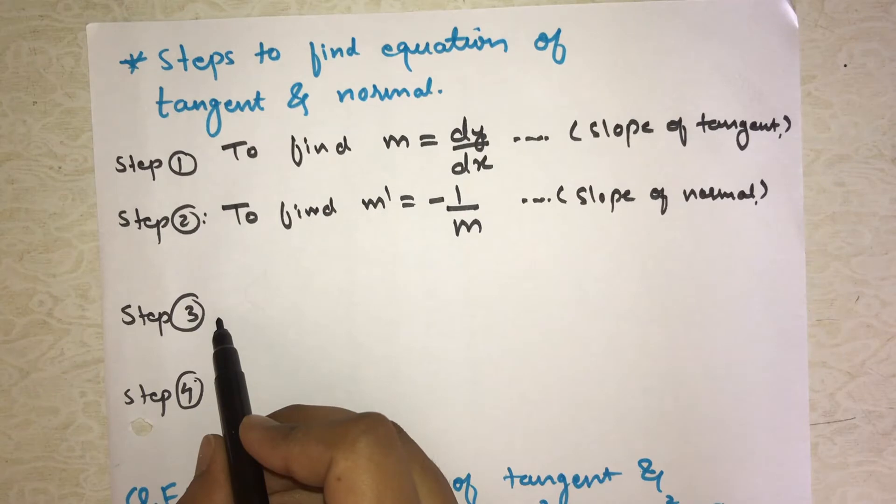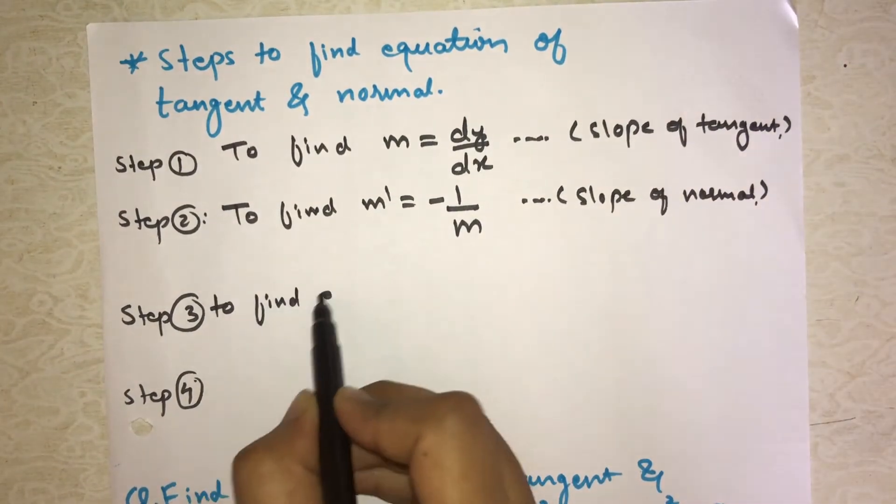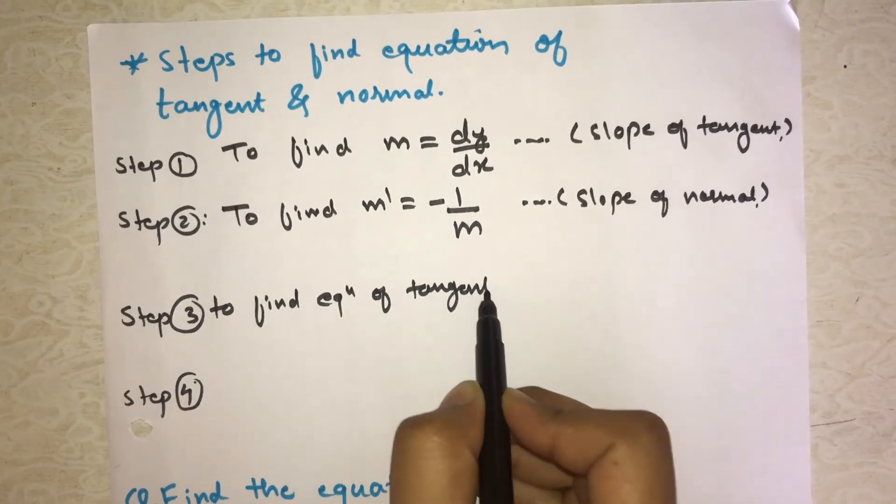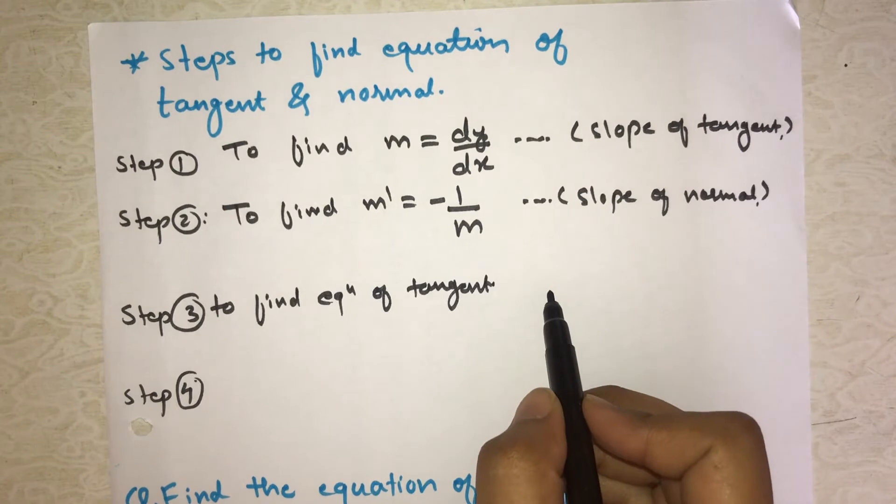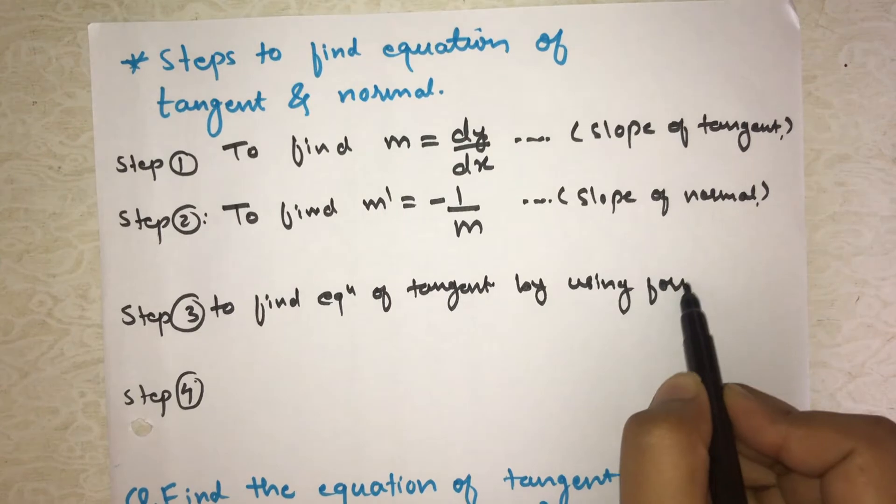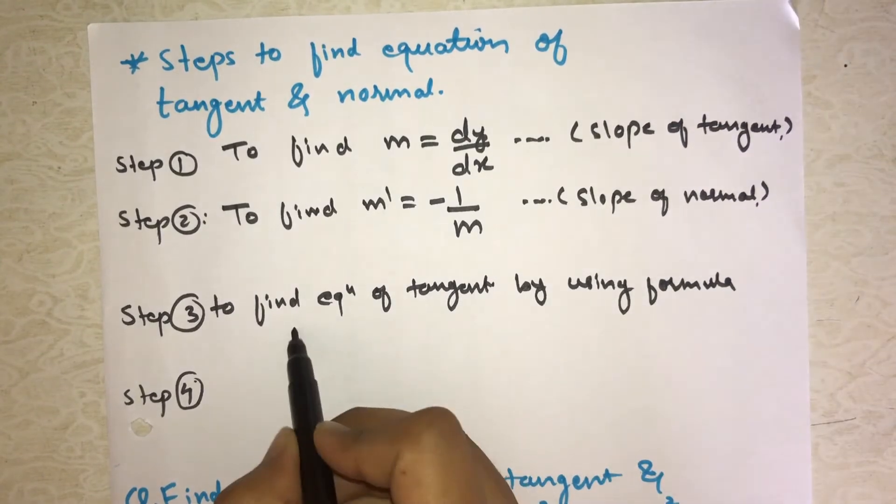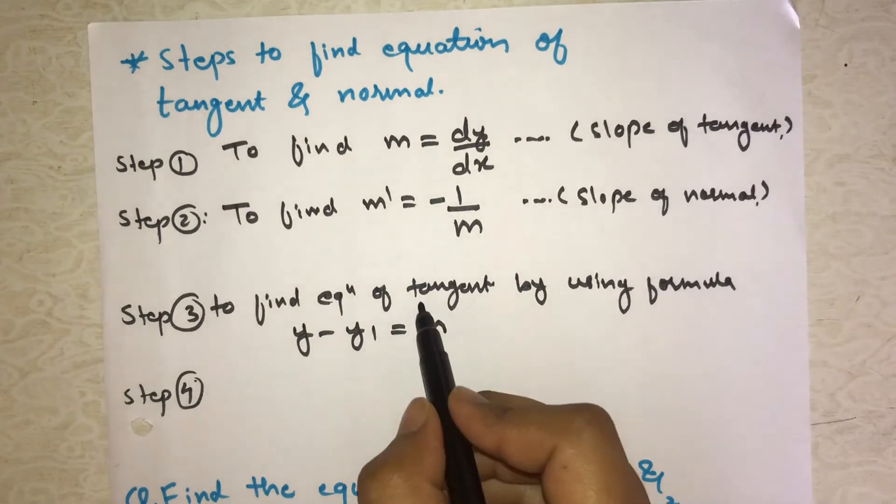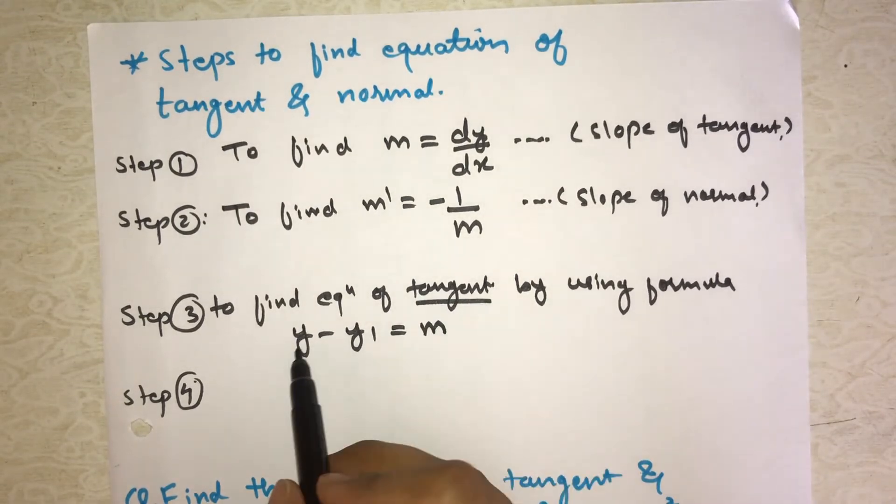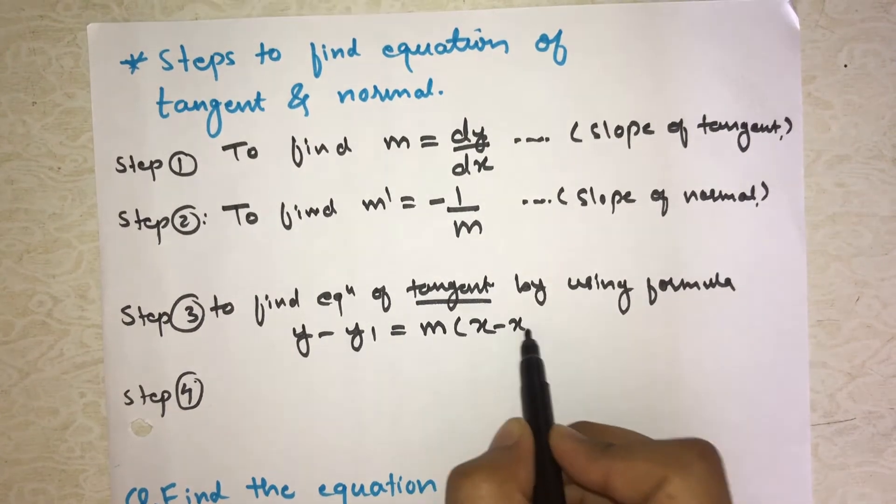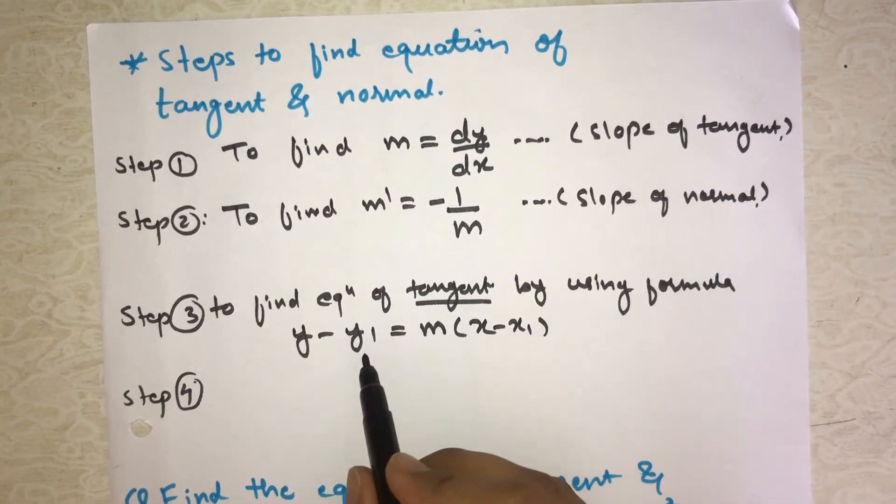Step three: we have to find equation of tangent by using the formula y minus y1 equals to m times (x minus x1), where x1 and y1 are the given coordinates.